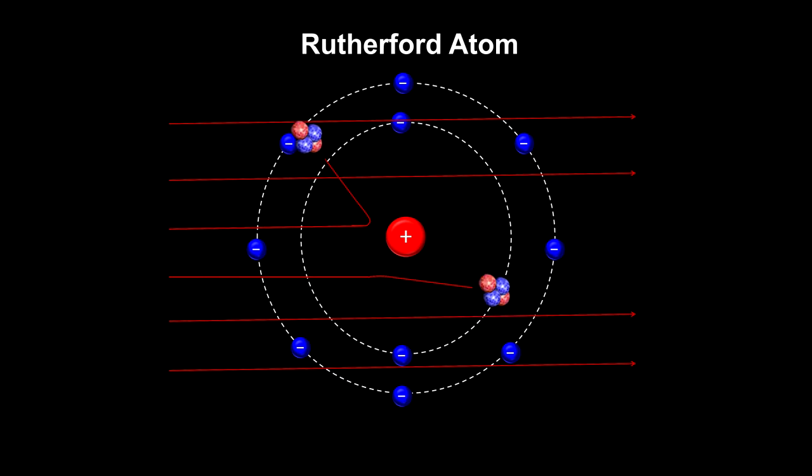Note that the closer the alpha particle is to the nucleus, the greater the angle of the deflection. We can use this angle to measure the maximum possible size of the nucleus.